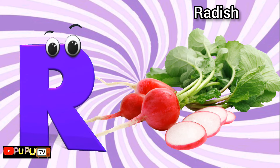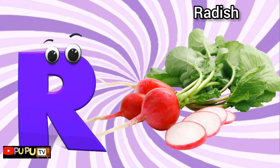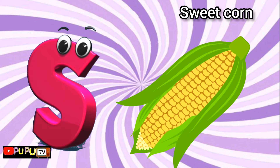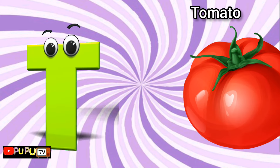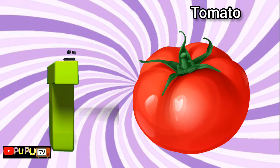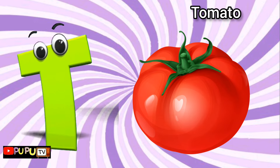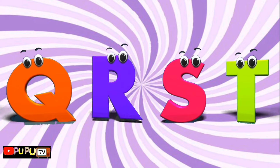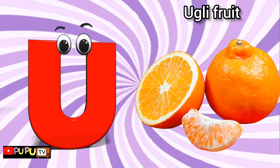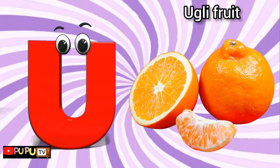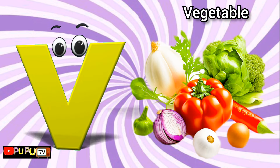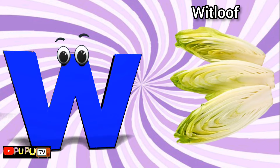R is for radish. S is for sweet corn. T is for tomato. U is for ugly fruit. V is for vegetables. W is for whit loaf.